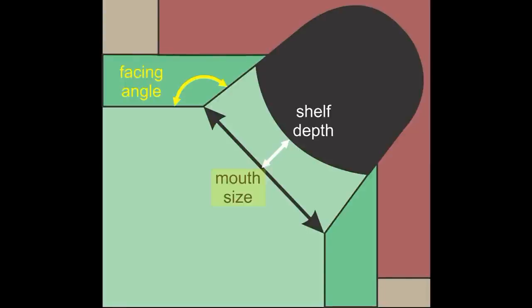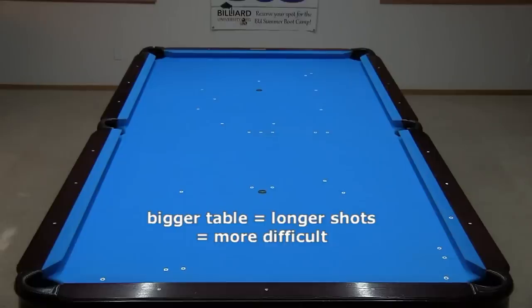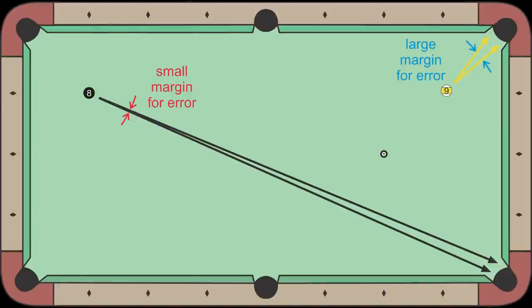The corner pocket opening size, facing angle, and shelf depth are particularly important. If a table is large, shots will generally be longer. And as shown here, longer shots have a much smaller margin for error than shorter shots, making them more difficult.